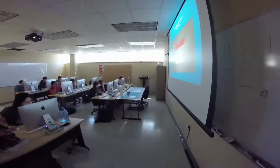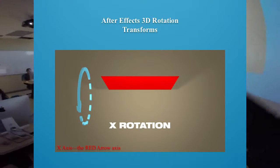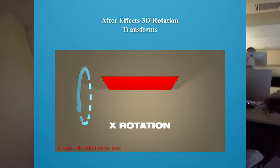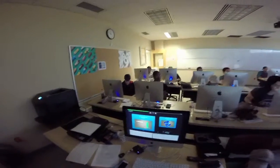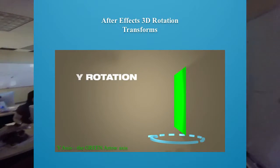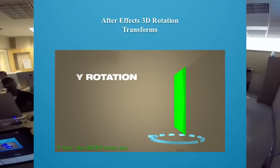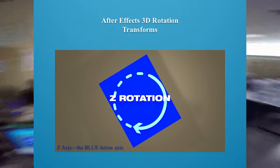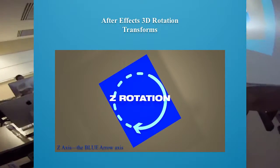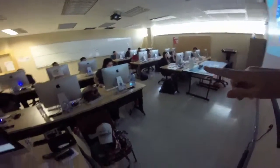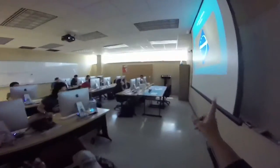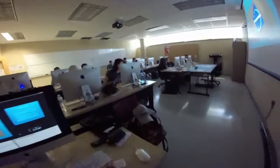From the animation I posted, here are some stills. X rotation lets you rotate a plane so it becomes a ceiling. Y rotation lets you rotate it so it becomes a wall. And Z rotation just spins it around like a pinwheel on a pin. That's rotation in 3D.